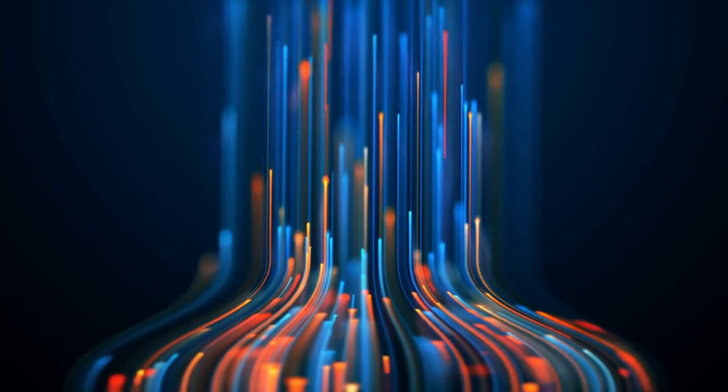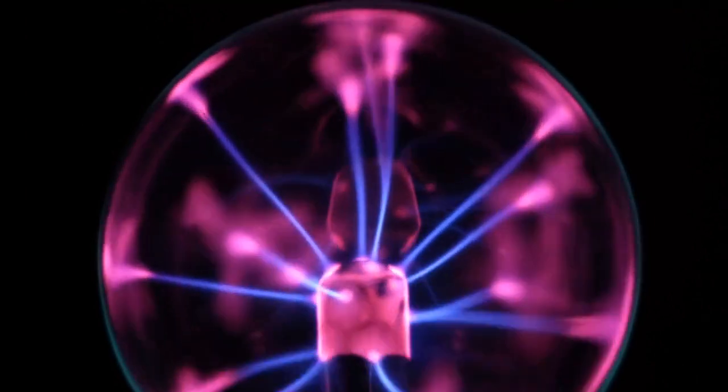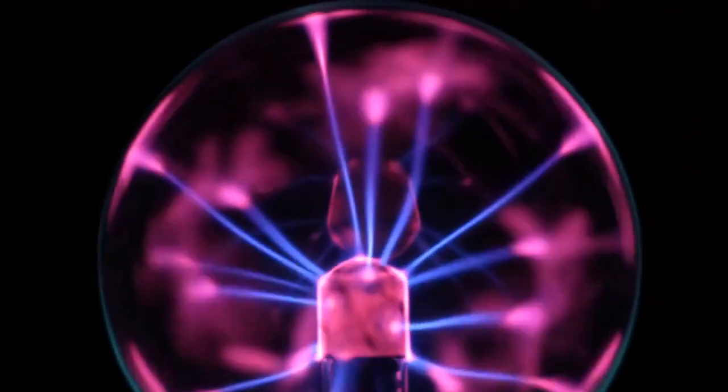But before Einstein, Max Planck had already set the stage for quantum mechanics. In 1900, he introduced the idea that energy isn't continuous, it comes in tiny, discrete packets called quanta. His work on black body radiation was the first major step toward quantum theory.